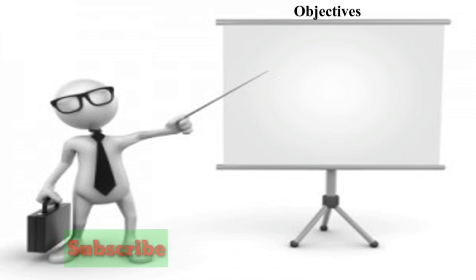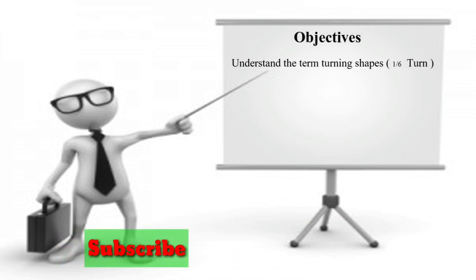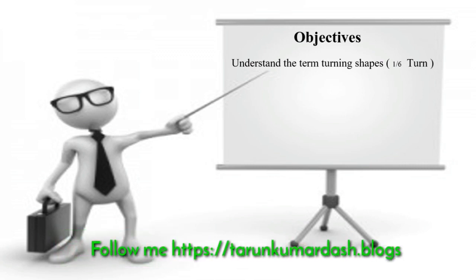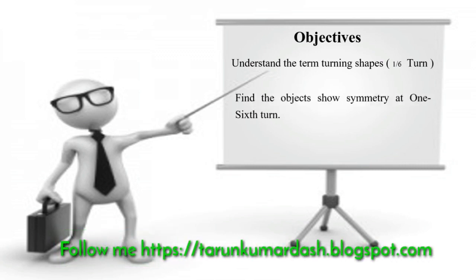Before going to the topic, let me find out the objectives we are going to achieve after this lesson. Objective number one: understand the term turning shapes, that is one by six turn. Objective two: find the objects that show symmetry at one-sixth turn.